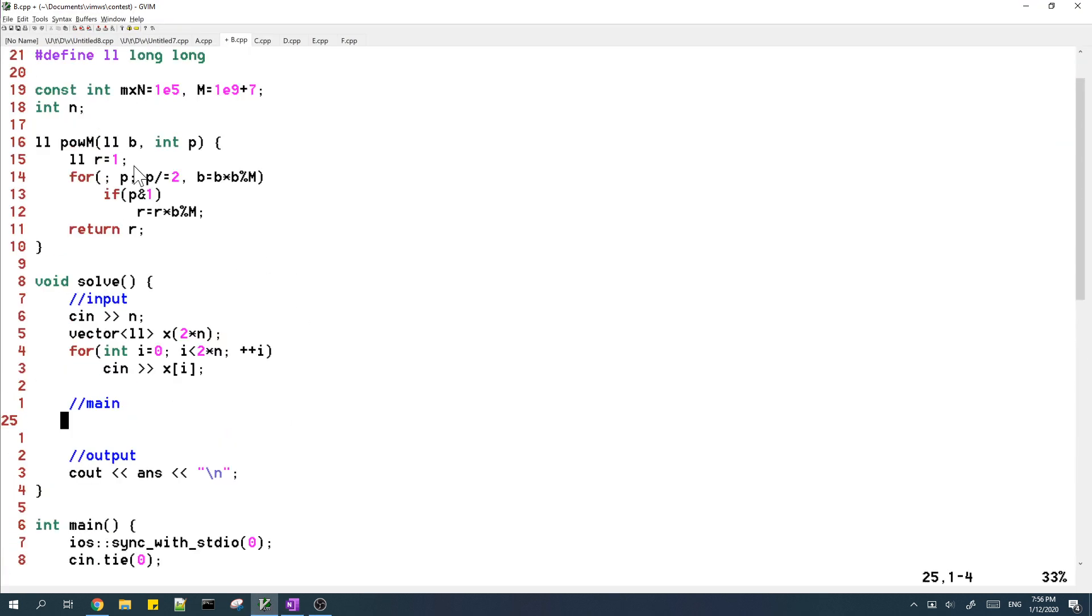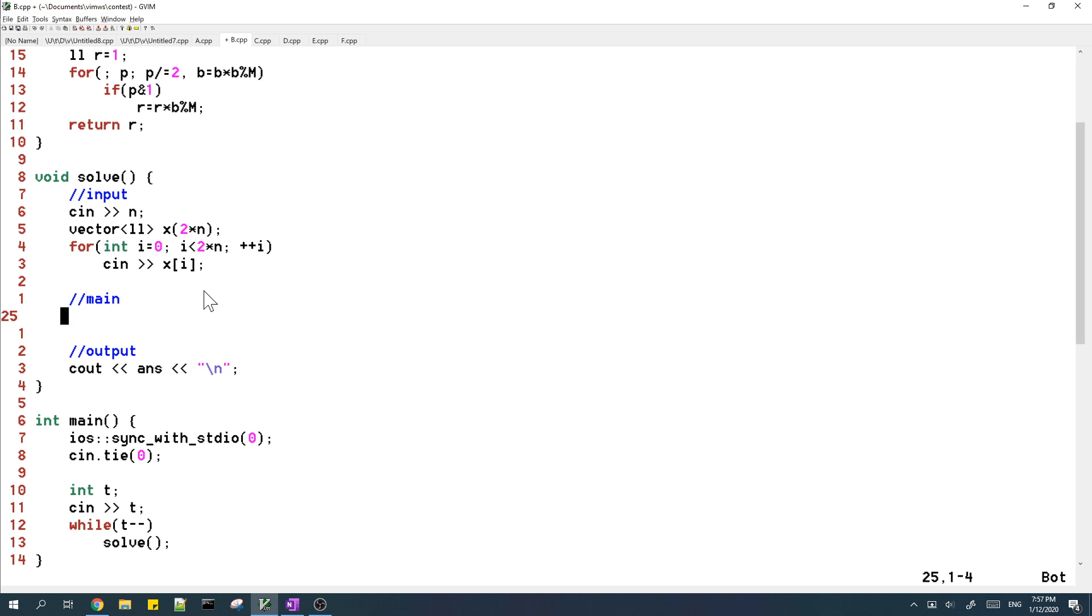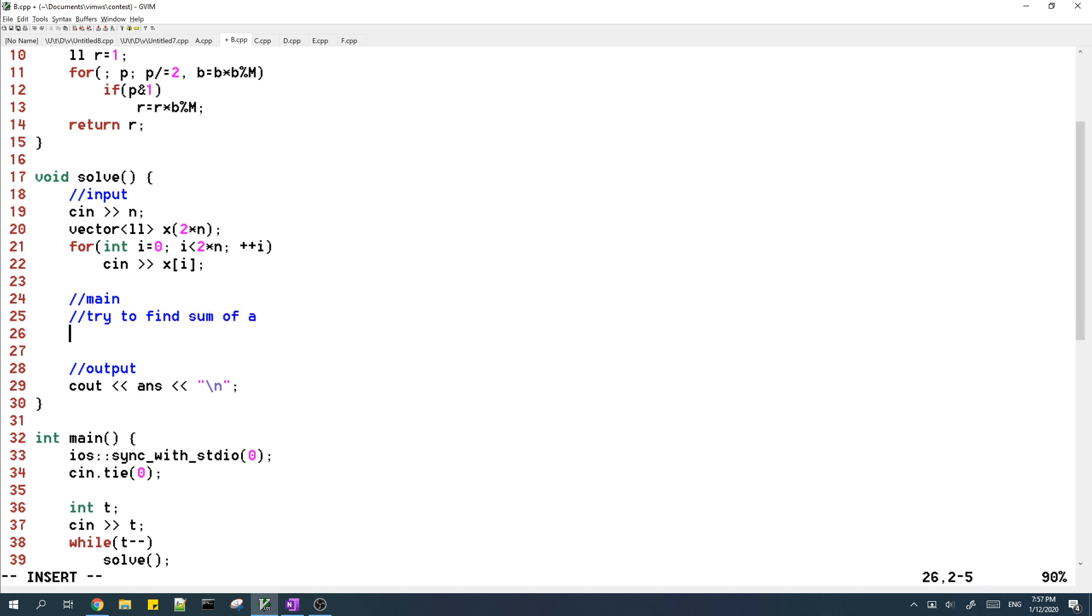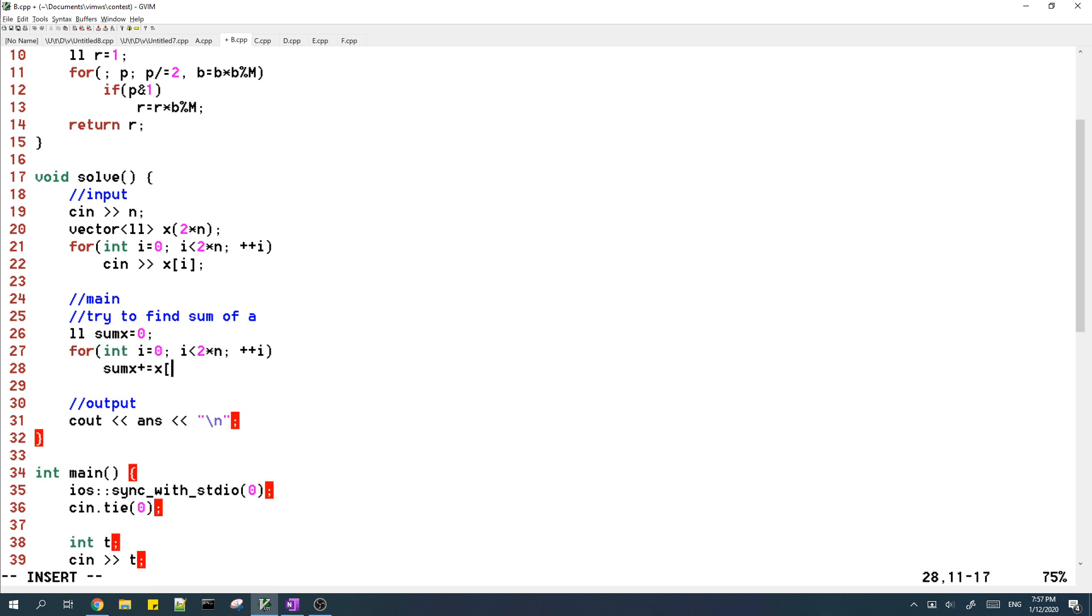So here in my code, I've already written the input and output. And we start by trying to find the sum of a. We do that by first finding the sum of x, and then we can divide sum of x by n plus 1.